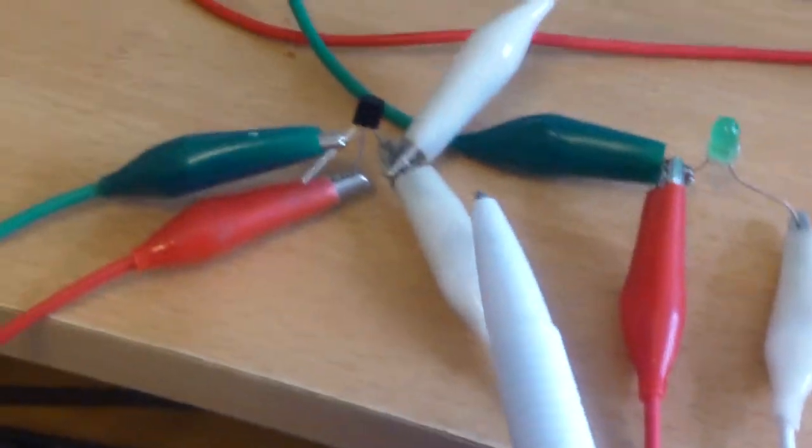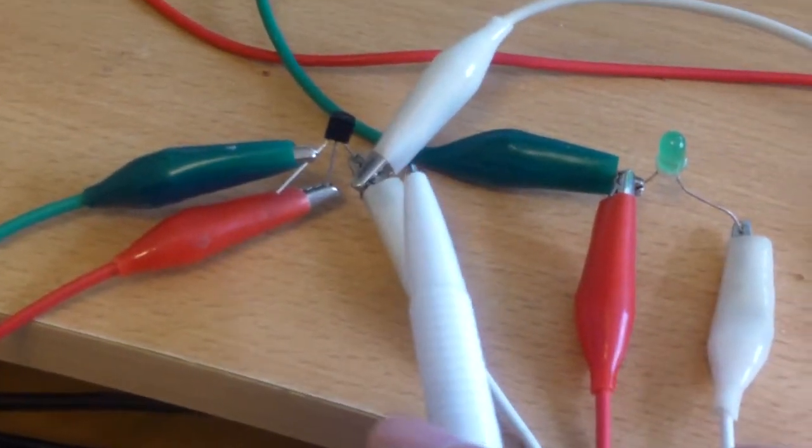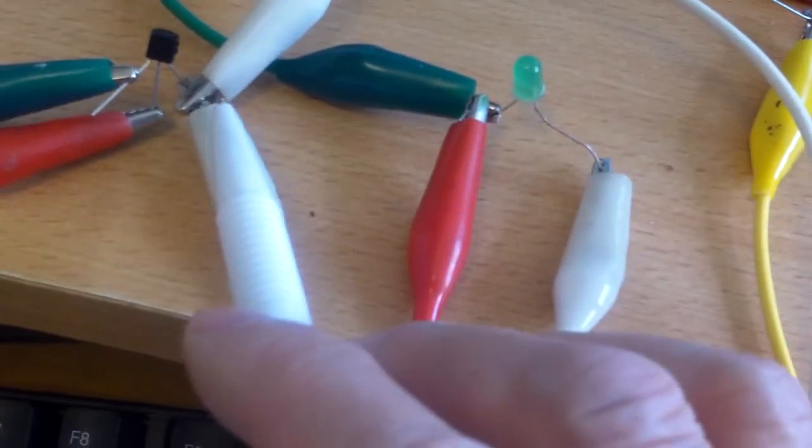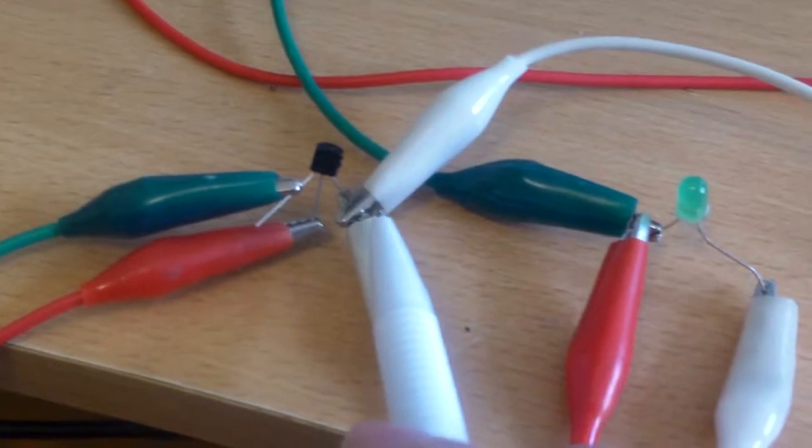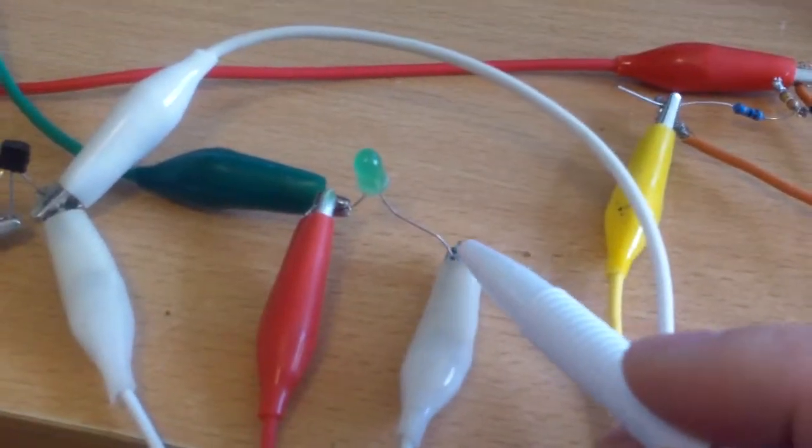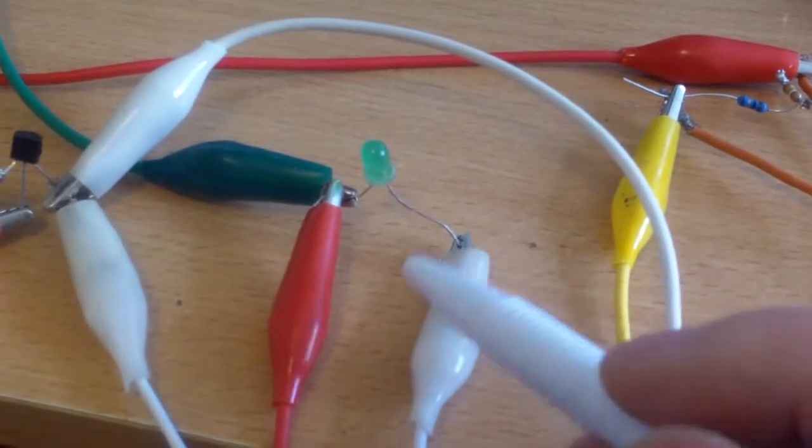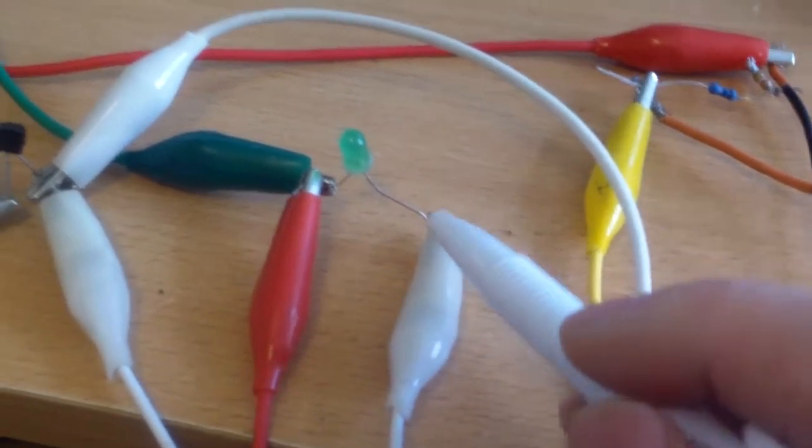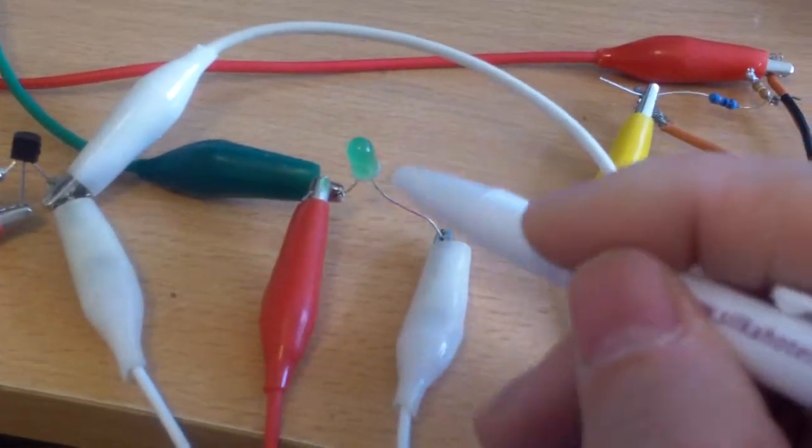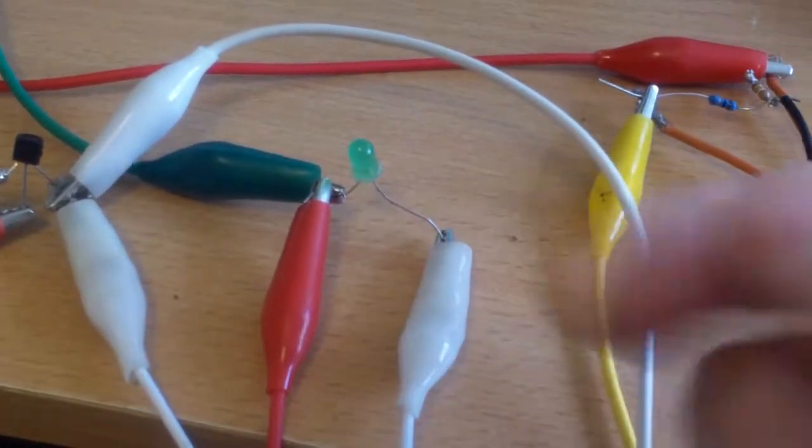And now to the emitter, which is the right pin. One part of that on the emitter side is connected to the negative of the LED. The negative has a shorter leg, and also there's a flat side. You can see on the LED there's like a flat side.